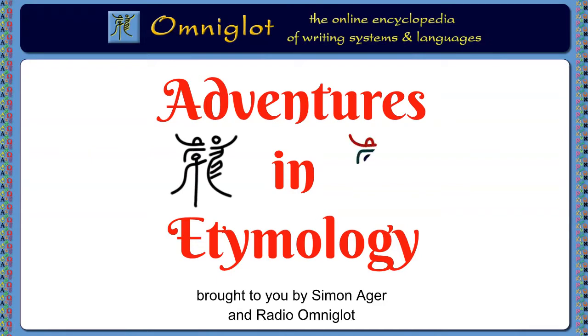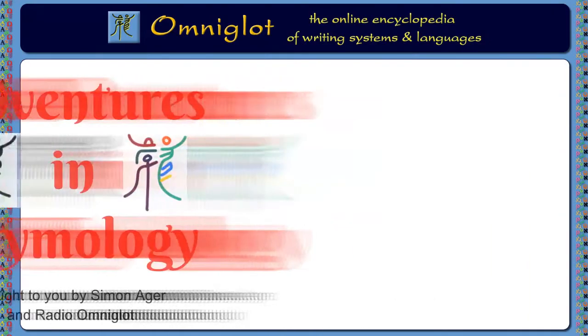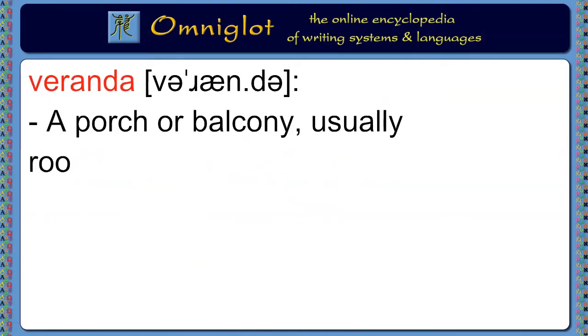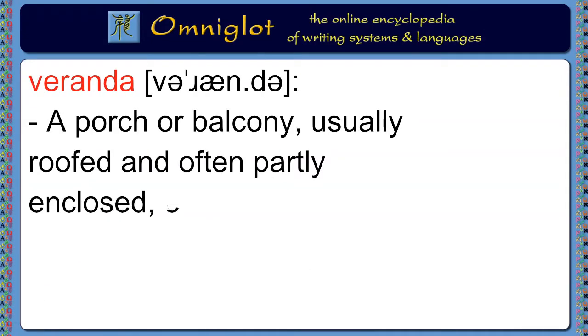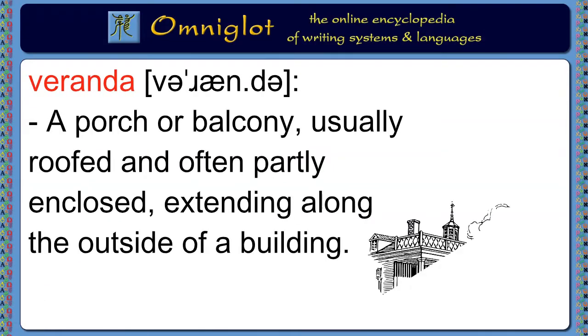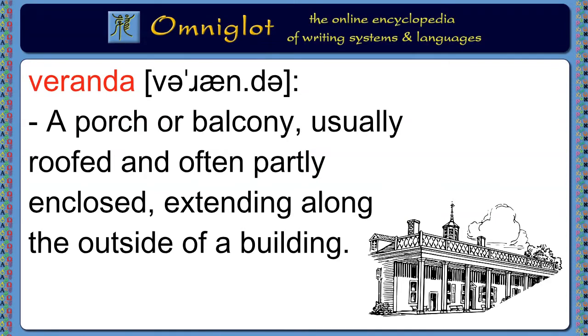Today we're looking at the various origins of the word veranda. A veranda is a porch or balcony, usually roofed, often partly enclosed, extending along the outside of a building.